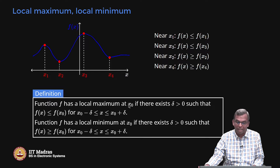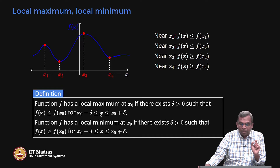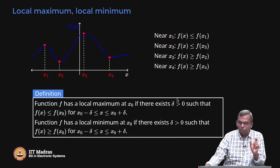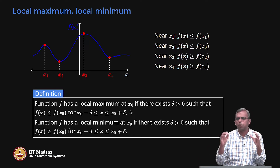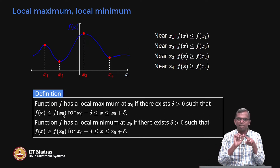Notice how the definition is made very precisely using a small delta. A function f has a local maximum at x₀ if there exists a delta greater than 0 such that f(x) ≤ f(x₀) for all x with x₀ − δ ≤ x ≤ x₀ + δ. By using this positive delta, which can be very, very small, we are controlling the interval around x₀ and defining what is "near x₀".